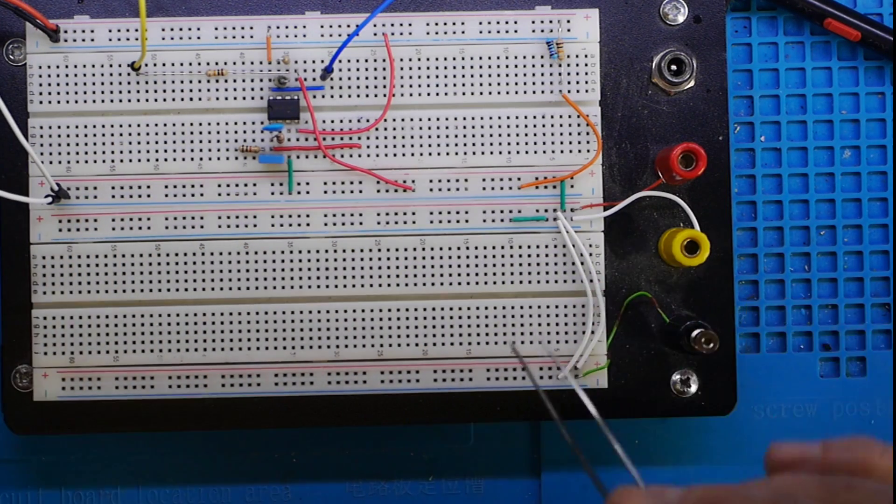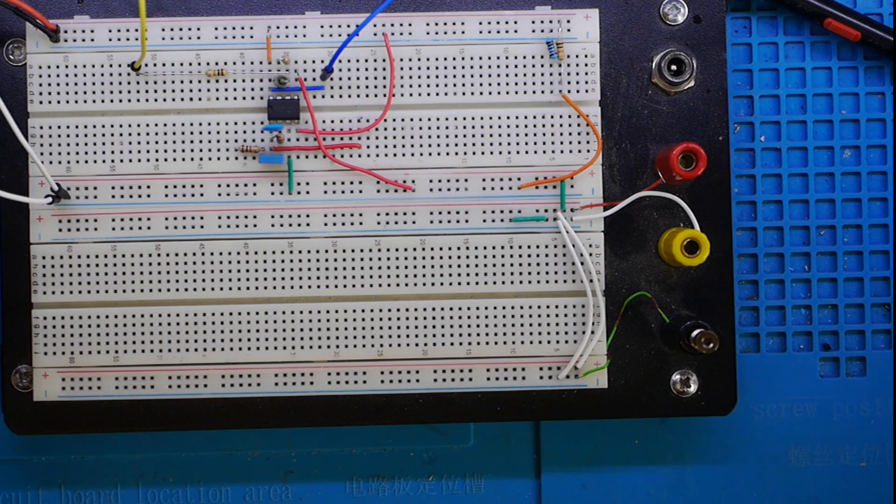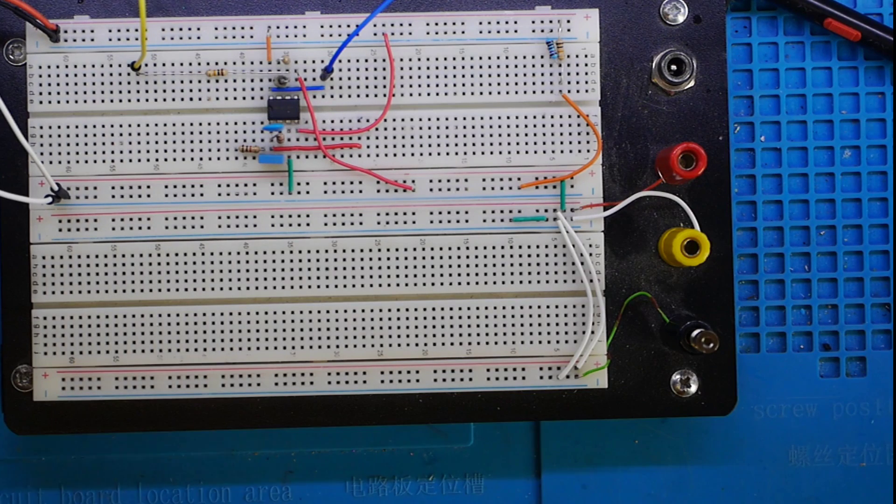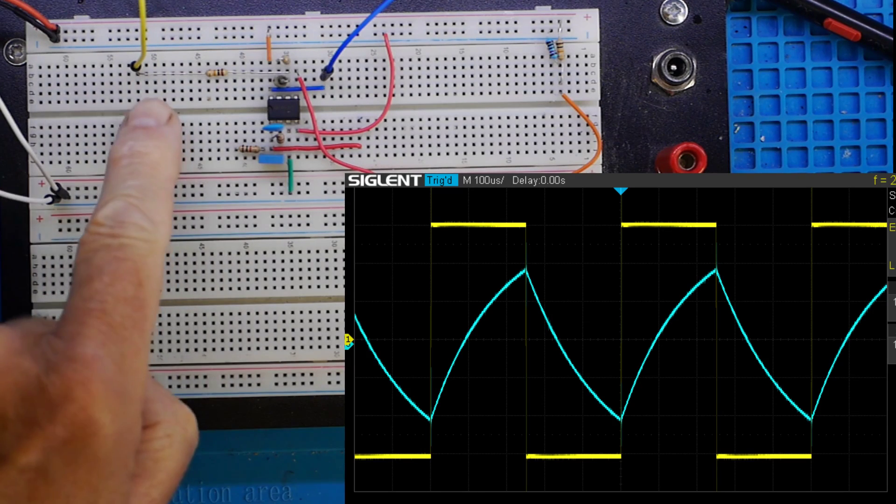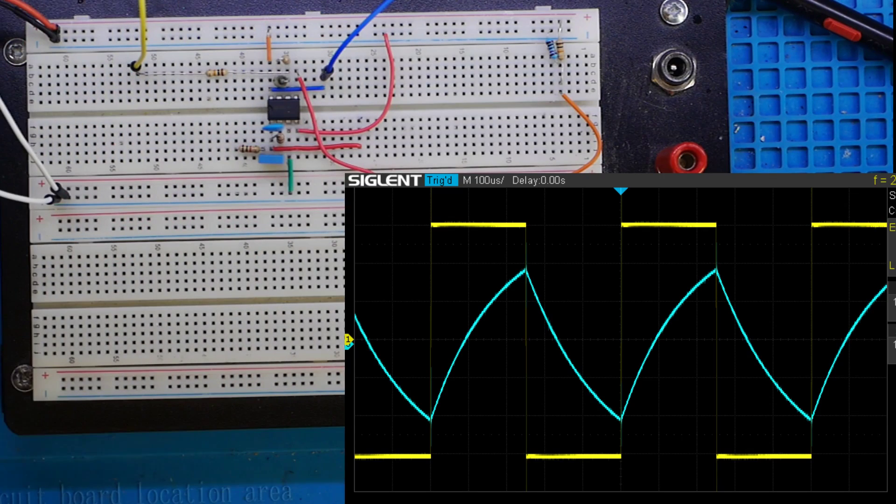We'll switch the signal generator on like so. Normally I would video the scope, but I'm going to take a screen grab because I want you to be able to look quite closely at the waveform. Here is the waveform: the yellow square waves are what's going in on the left, and the blue sawtooth is what's coming out on the right.